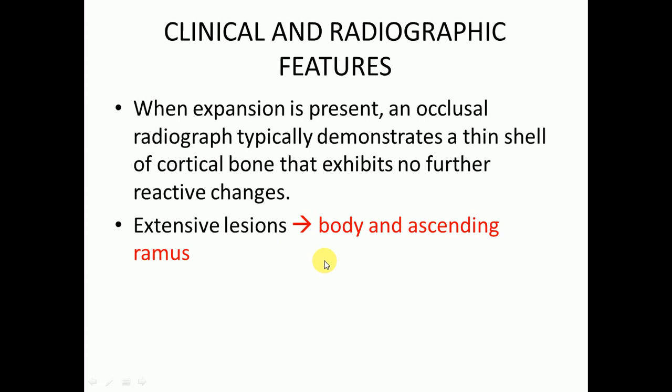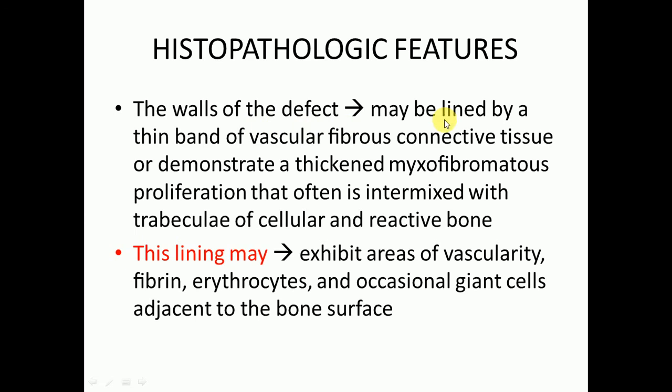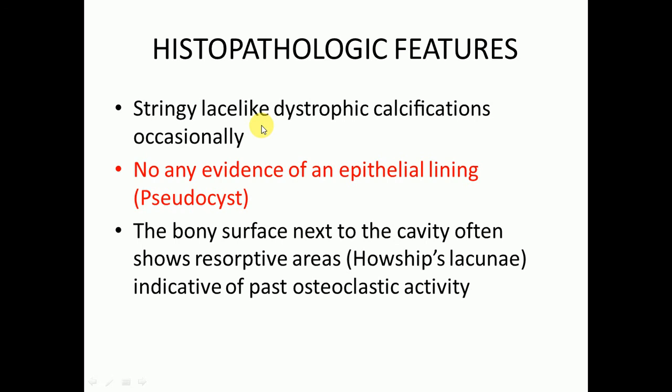Now we will discuss histopathological features. The walls of the defect may be lined by a thin band of vascular fibrous connective tissue, or demonstrate a thickened myofibroblastic proliferation often intermixed with trabeculae of reactive bone. This lining may exhibit areas of vascularity, fibrin, erythrocytes, and occasional giant cells adjacent to the bone surface. Stringy lace-like dystrophic calcification may occasionally be present. There is no epithelial lining, confirming its pseudocyst nature. The bony surface often shows resorptive Howship's lacunae, indicative of past osteoclastic activity.